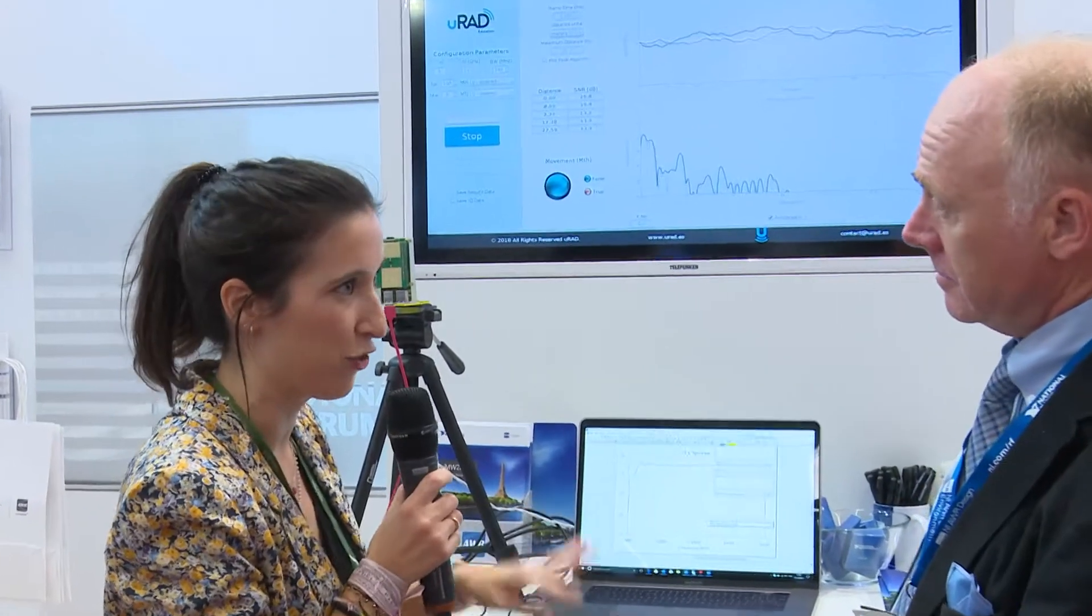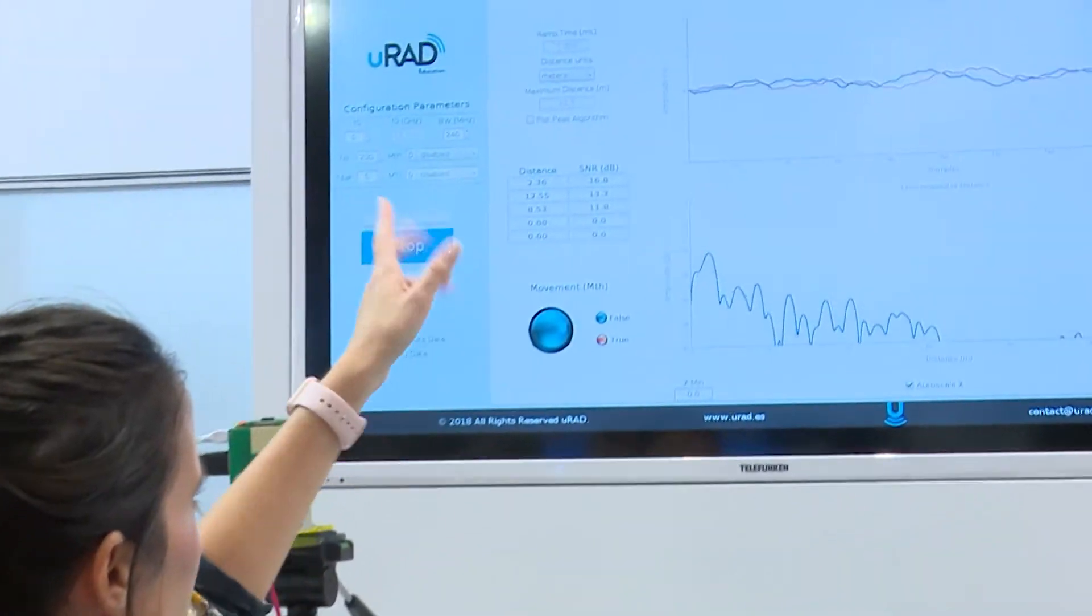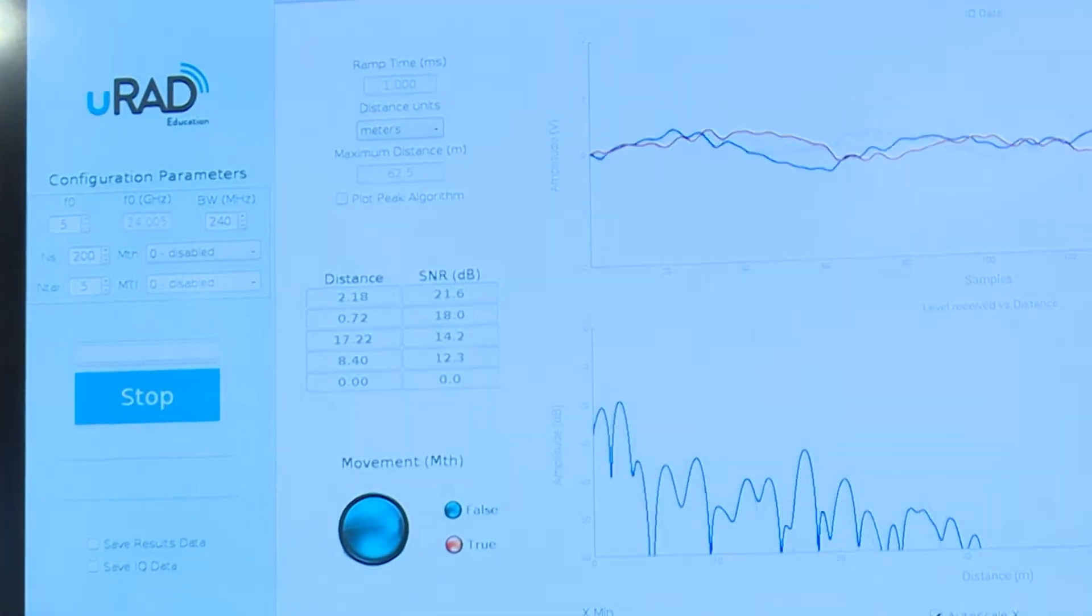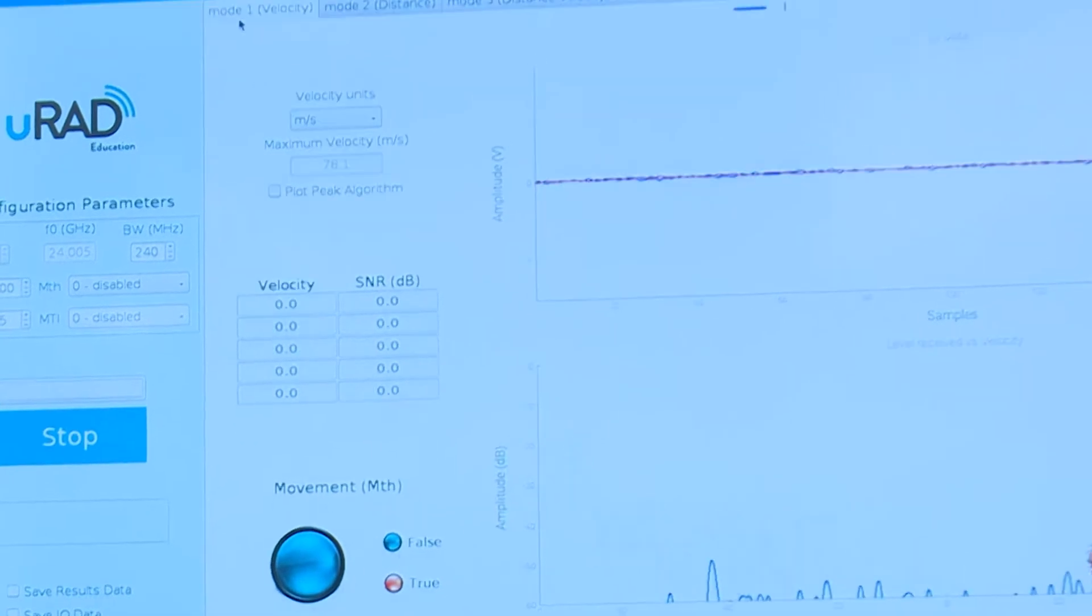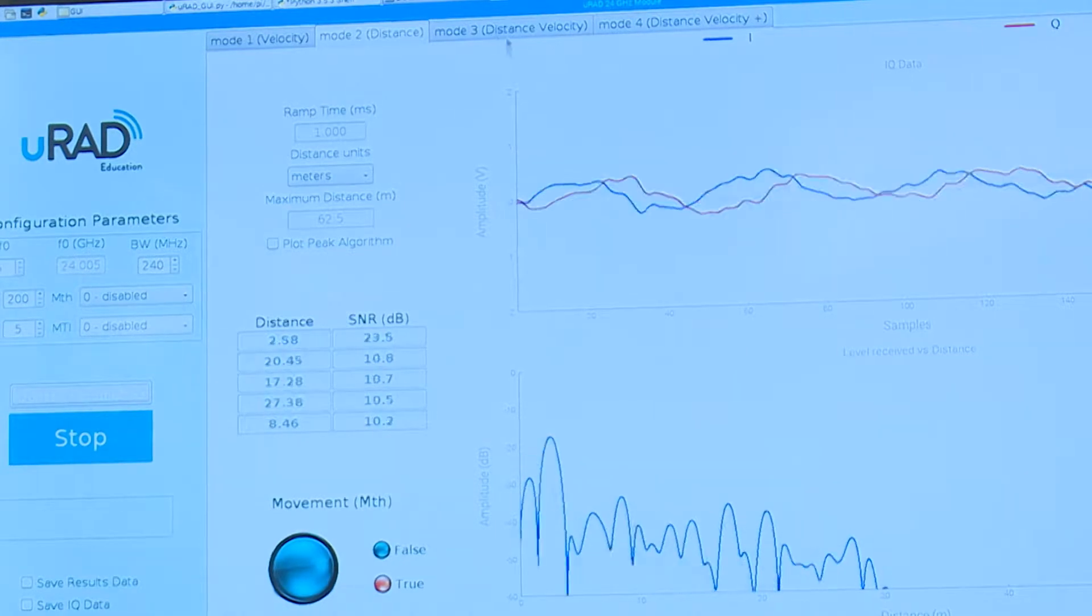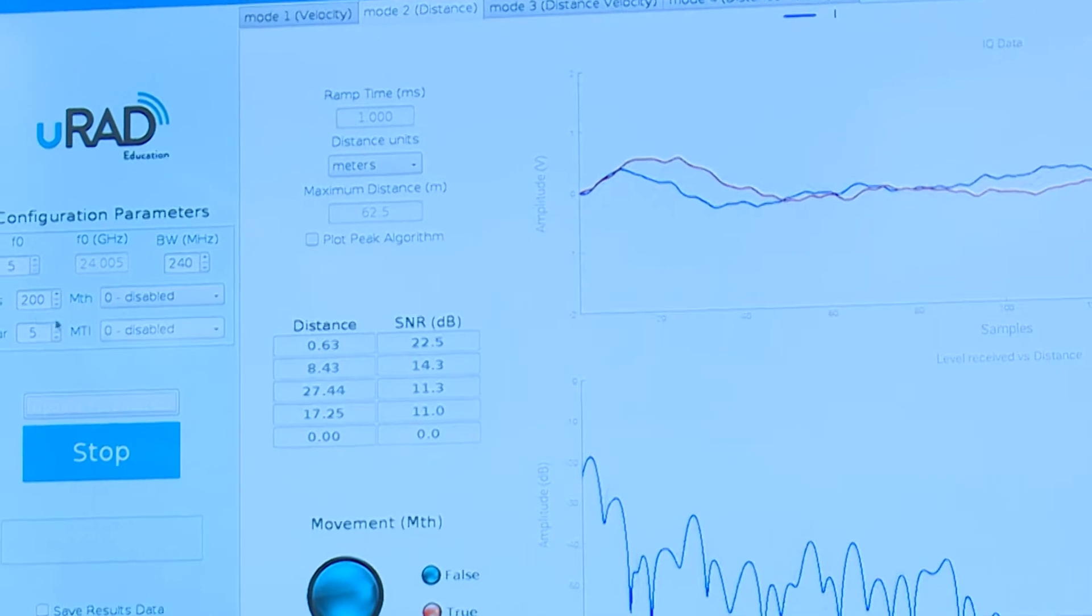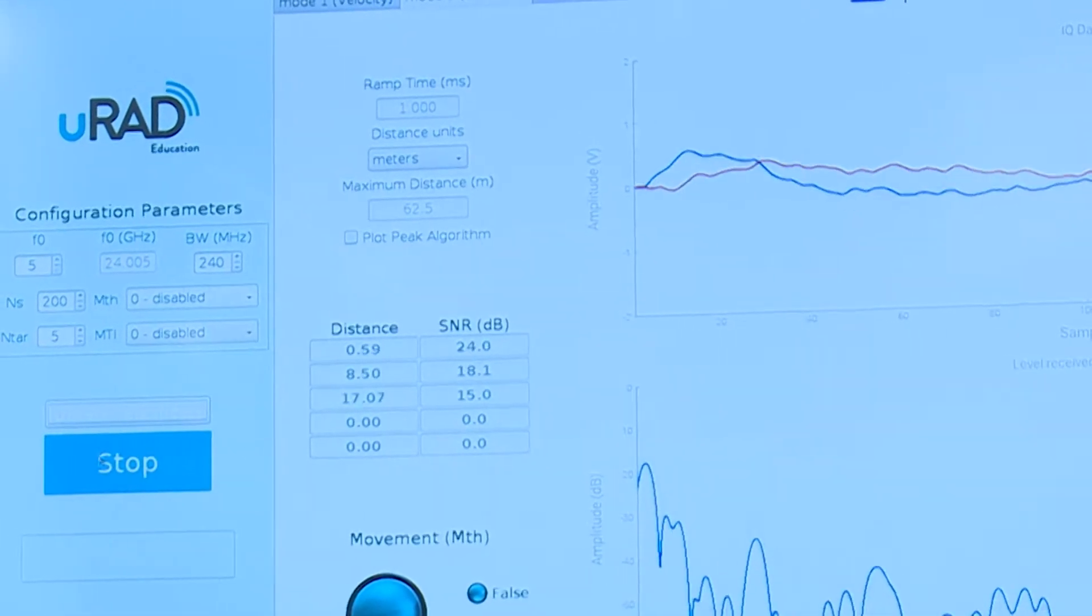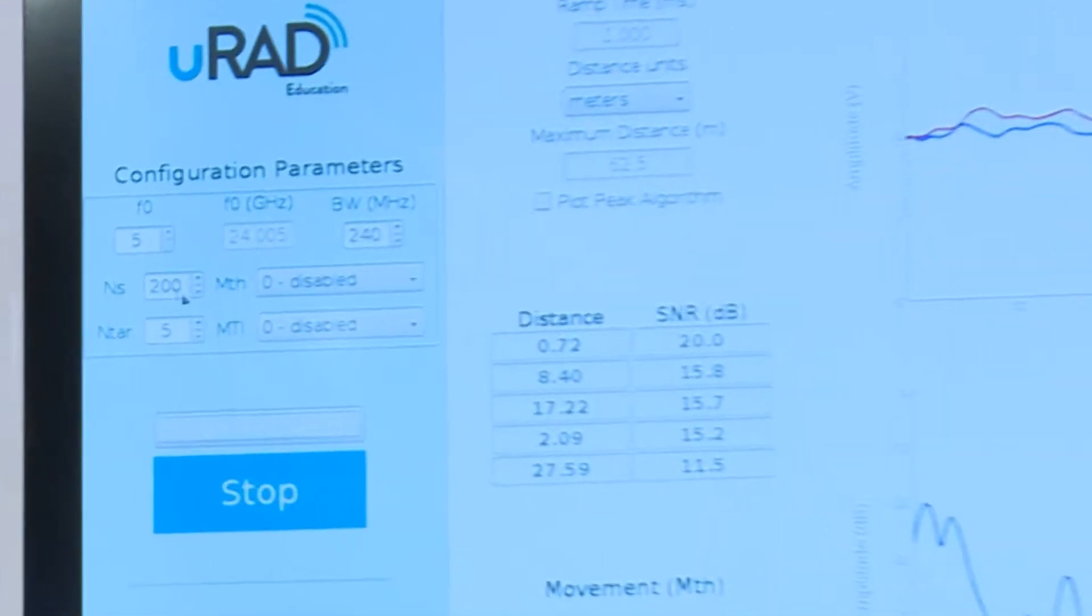Maybe you can walk us through this now. Our radar system is able to work at four different modes of operation. So we can select the different modes here, up here. If we want to measure velocity or we want to measure distance or both parameters at the same time with mode 3 or mode 4. So here, the user can configure all the parameters, such as the number of targets, the number of samples.